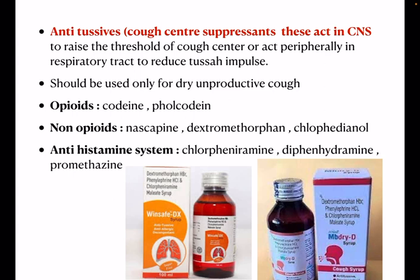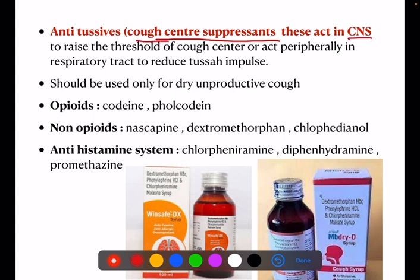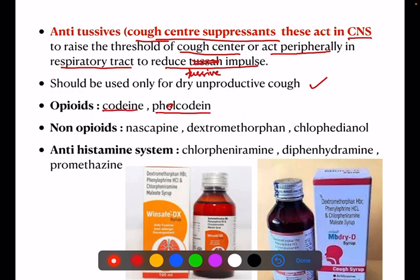CNS-acting antitussives, also called cough center suppressants, work in the CNS to raise the threshold of the cough center and act peripherally in the respiratory tract to reduce tussive impulses. These should be used only for dry, unproductive cough. Examples include opioids such as codeine and pholcodine; non-opioids such as noscapine and dextromethorphan; chlorpheniramine; and antihistaminic drugs like diphenhydramine and promethazine.